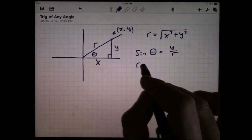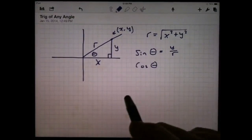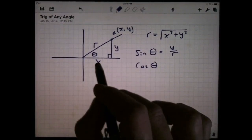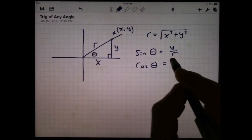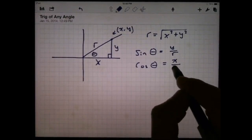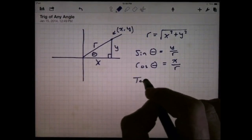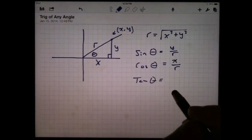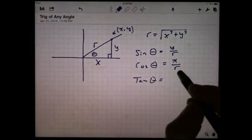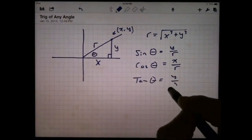And the cosine of theta, again, if it's going to coincide with what we've already done, cosine of theta should be adjacent over hypotenuse. So that looks like x divided by r. The tangent of theta is the opposite over adjacent, so y divided by x.